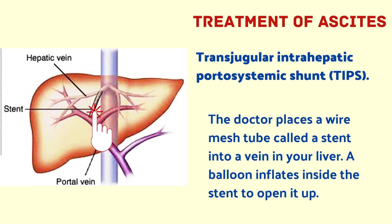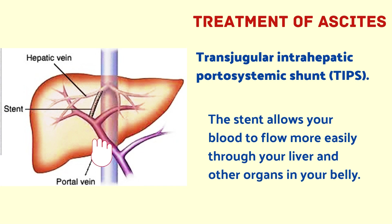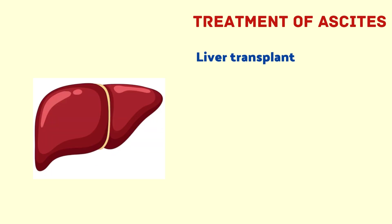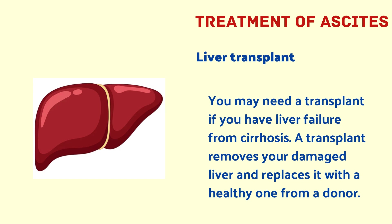The next treatment option is transjugular intrahepatic portosystemic shunt (TIPS). The doctor places a wire mesh tube called a stent into a vein in your liver; a balloon inflates inside the stent to open it up, allowing blood to flow more easily through your liver and other organs in your belly. The next treatment option is liver transplant — you may need one if you have liver failure from cirrhosis. A transplant removes your damaged liver and replaces it with a healthy one from a donor.